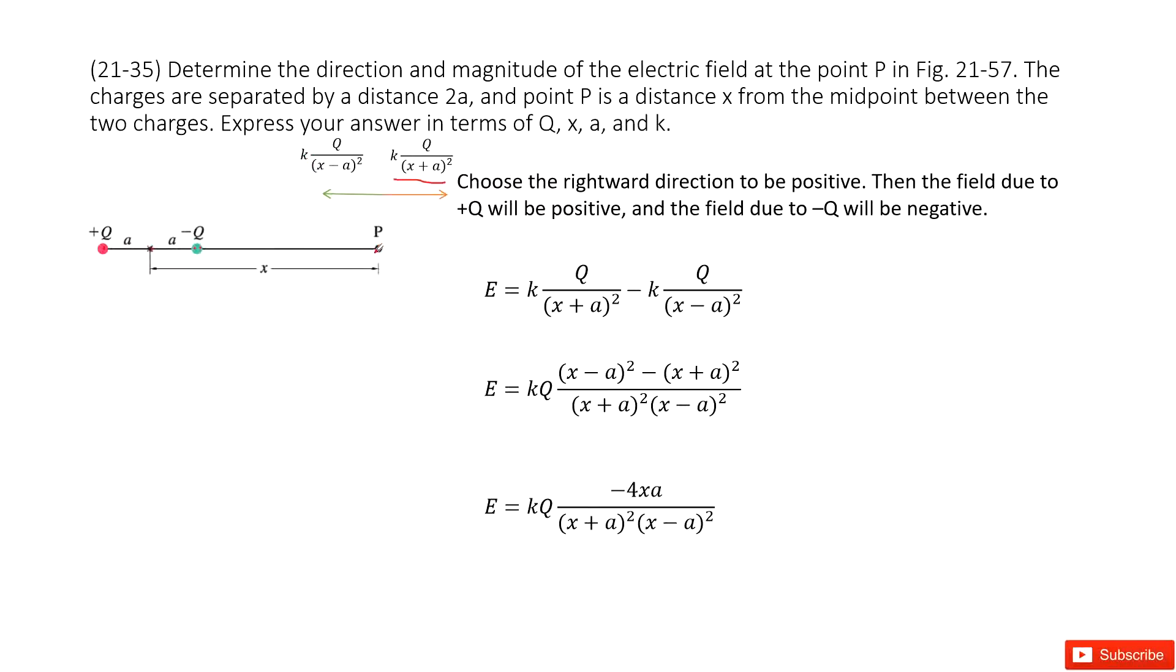Now we can see, if we want to find the electric field at P, we need to find the addition for these two vectors. So we can just get the magnitude of the electric field. We can get the electric field at P, write it as the electric field from positive charge minus the electric field from negative charge. And do this calculation.